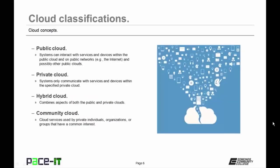There are four basic cloud classifications. There is the public cloud, where systems can interact with services and devices within the public cloud and on public networks such as the internet — Amazon's AWS is an example. Then there are private clouds, where systems only communicate with services and devices within the specified private cloud, and they are not open for the general public to purchase services. Then there are hybrid clouds, which combine aspects of both public and private clouds. And finally, there is the community cloud classification, where cloud services are used by private individuals, organizations, or groups that have a common interest.